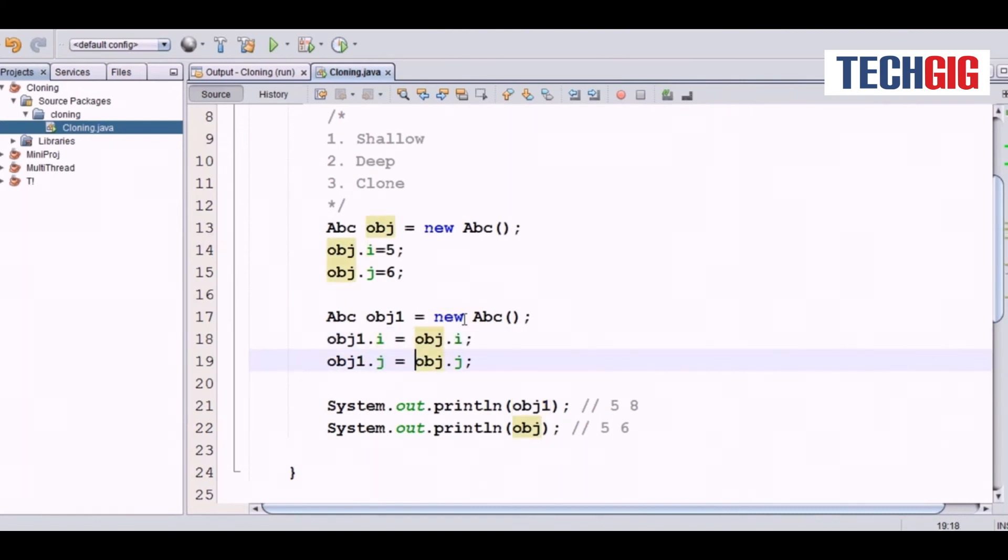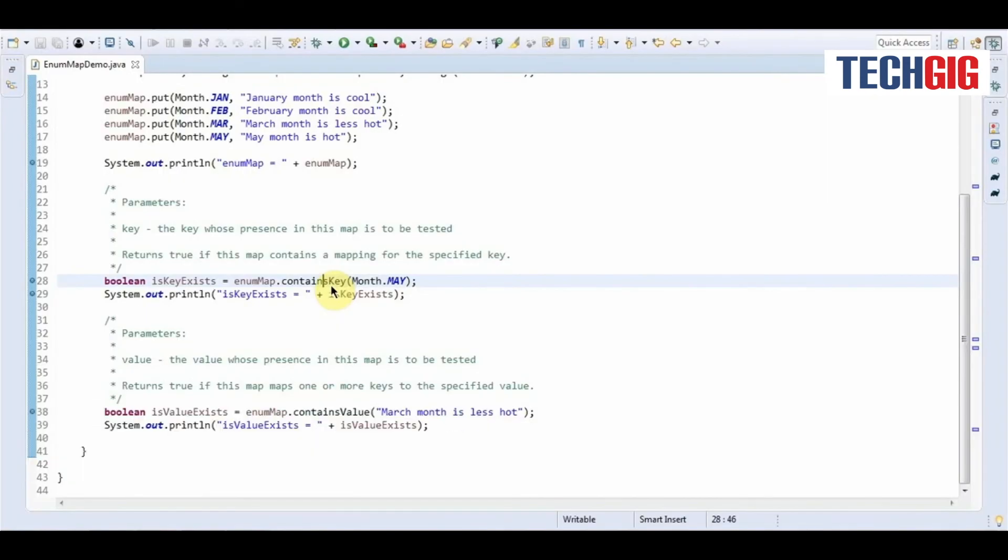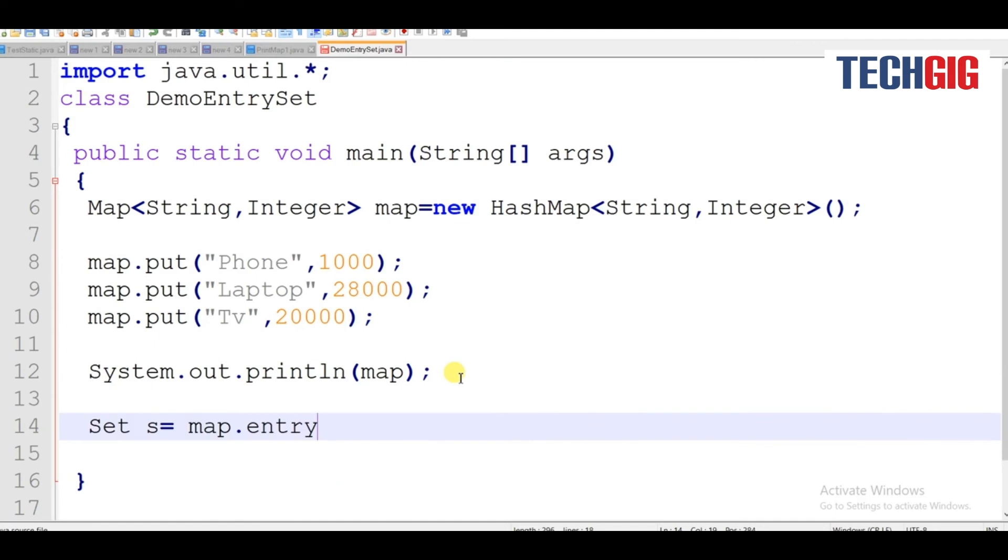ComputeIfPresent calculates a new mapping. ContainsKey is the method for checking if this map has a mapping for the given key. EntrySet is used to create a set of identical elements in a HashMap.